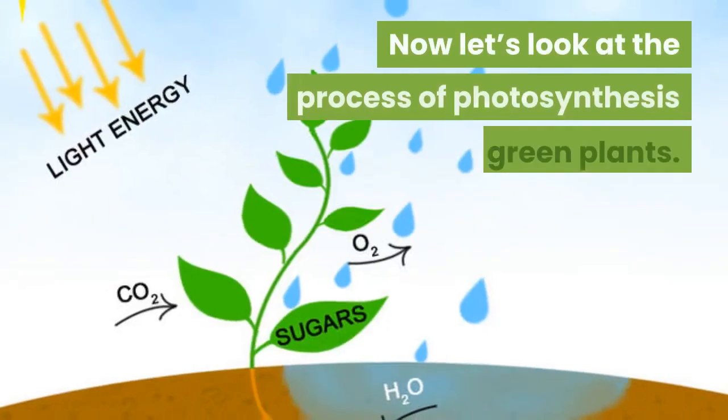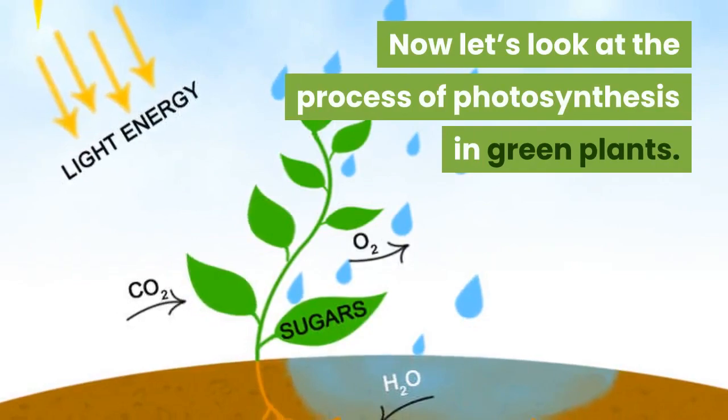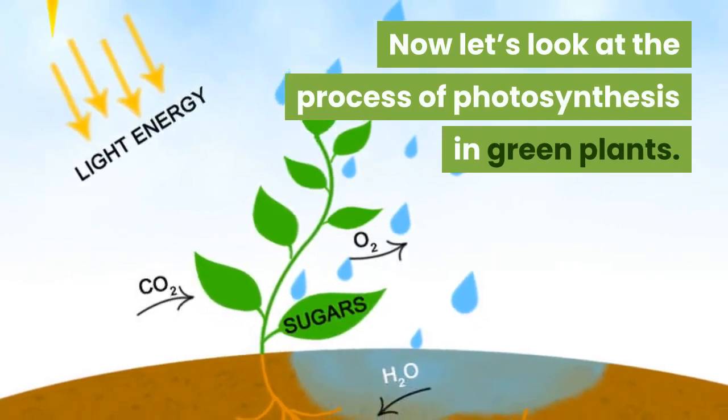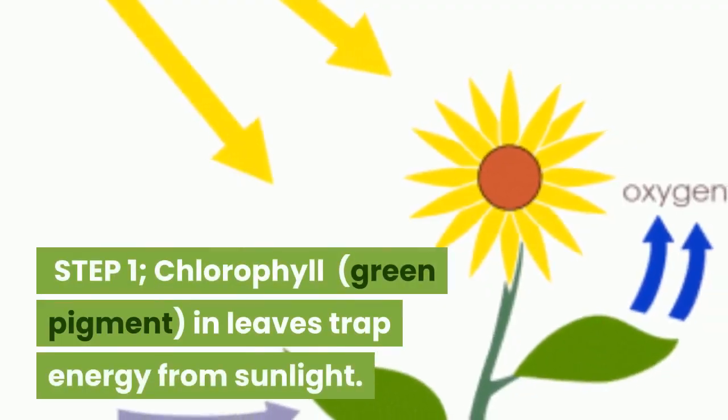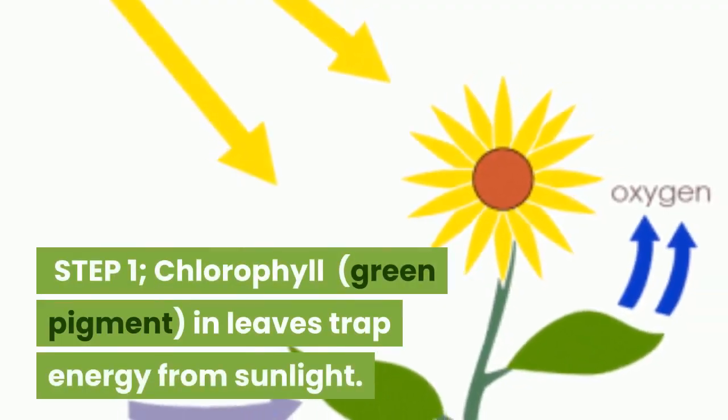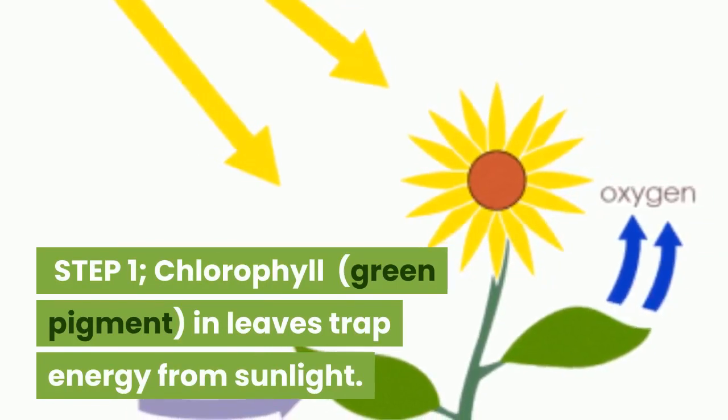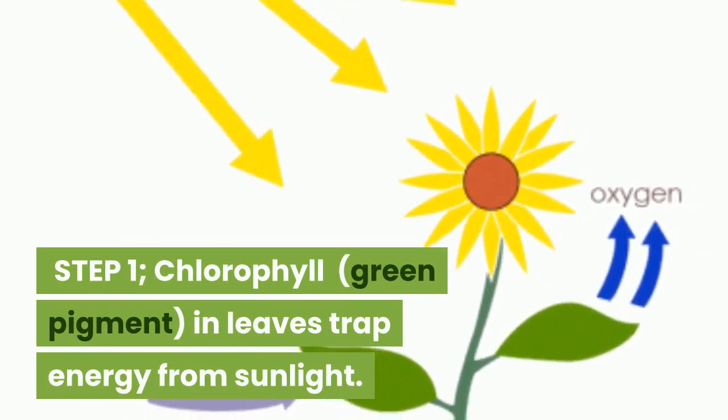Now let's look at the process of photosynthesis in green plants. Step 1: chlorophyll, the green pigment in leaves, traps energy from sunlight.